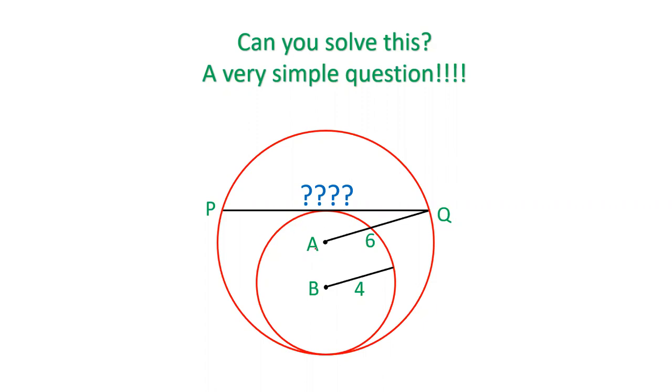There are two circles with different centers A and B. There is a tangent to the inner circle which is the chord to the outer circle. The radius of the outer circle is 6, the radius of the inner circle is 4. What is the length of PQ? PQ is the tangent to inner circle and outer circle's chord.